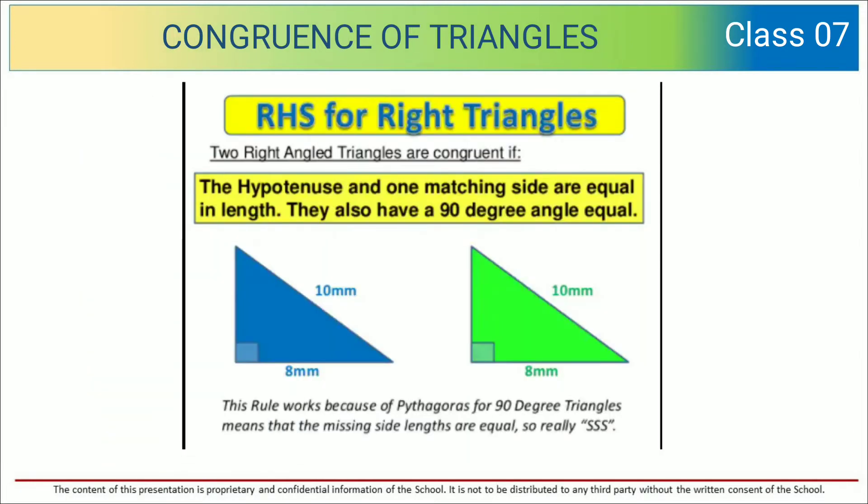So for RHS, that is right triangles, two right angled triangles are congruent if the hypotenuse and one matching side are equal in length. They also have a 90 degree angle equal.